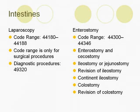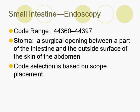Other procedures on the intestines include laparoscopy, which is only for surgical procedures. Artificial openings, or ostomies, will be coded according to the area in which the ostomy is located. Terminology is necessary to code correctly. Endoscopy of the small intestine is based on scope placement. These codes can also be used to report endoscopic procedures through a stoma, which is a surgical opening between a part of the intestine and the outside surface of the abdominal skin. Always code endoscopies to the furthest extent of the procedure — that is, according to the furthest part the scope reached.